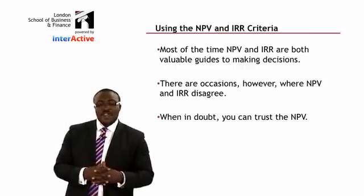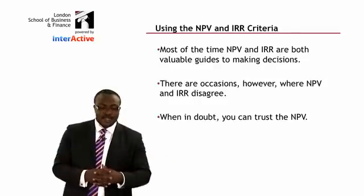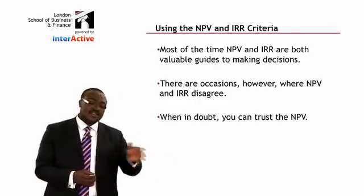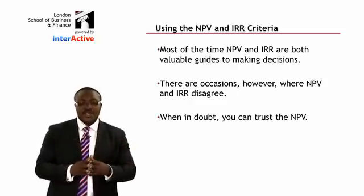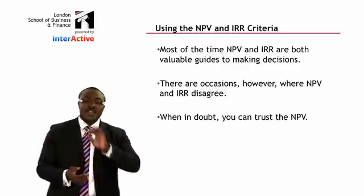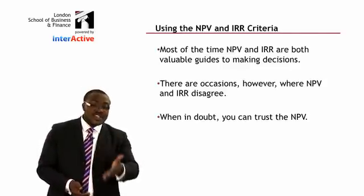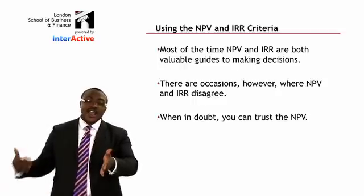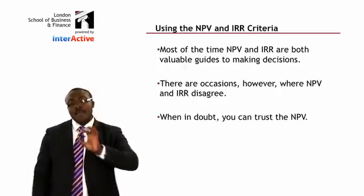How do we use NPV and IRR criteria? Both are valuable guides to making decisions, but there are occasions when they may give varying results. When in doubt, rely on the NPV. The NPV is an absolute value in money terms — $10 is $10. The IRR result is a percentage, so you must ask: 10% of what? Always rely on the NPV when there is a conflict.